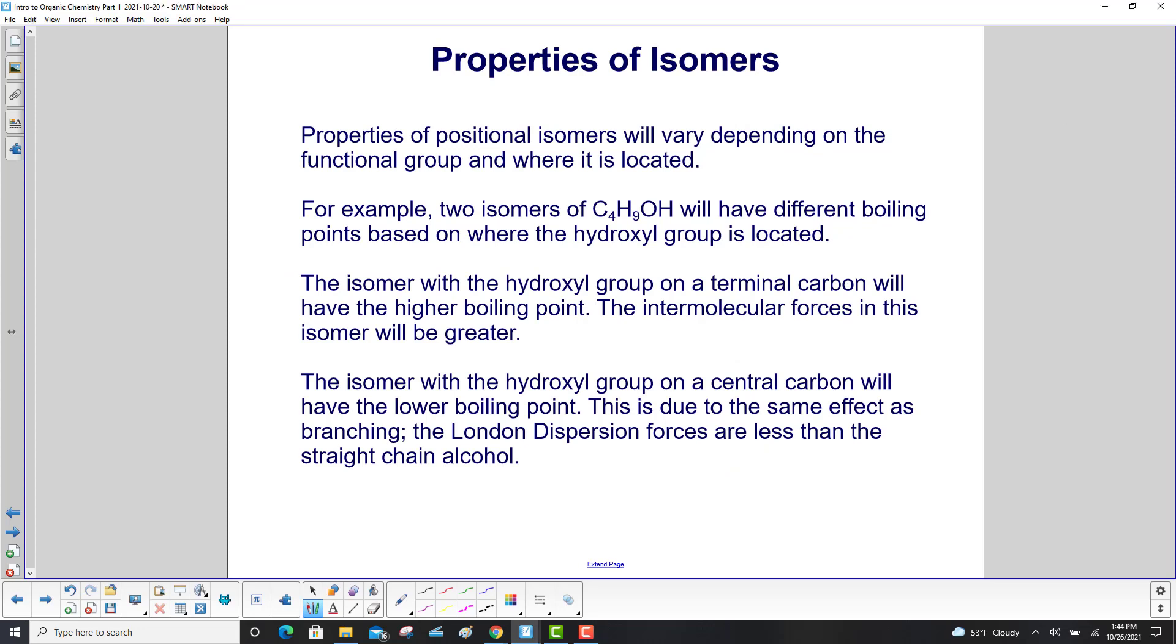Properties of isomers. We'll start with positional isomers. Their properties will vary depending on the functional group and where it is located. For example, two isomers of C4H9OH will have different boiling points based on where the hydroxyl group is located. The isomer with the hydroxyl group on a terminal carbon will have the higher boiling point. The intermolecular forces in this isomer will be greater.